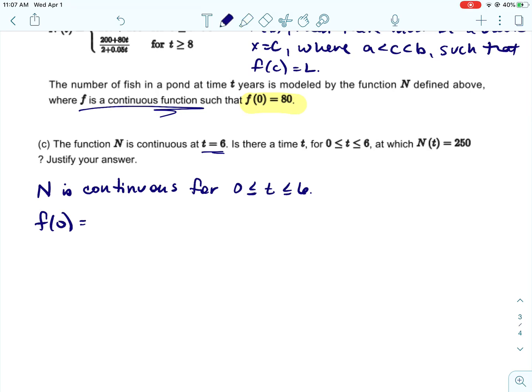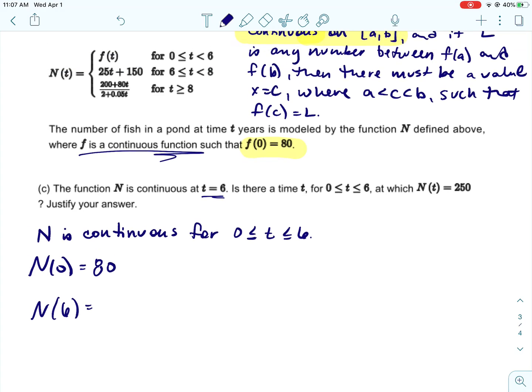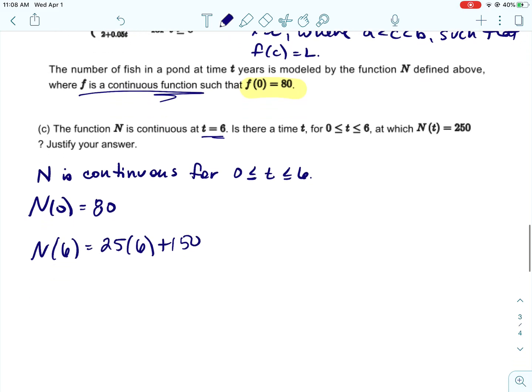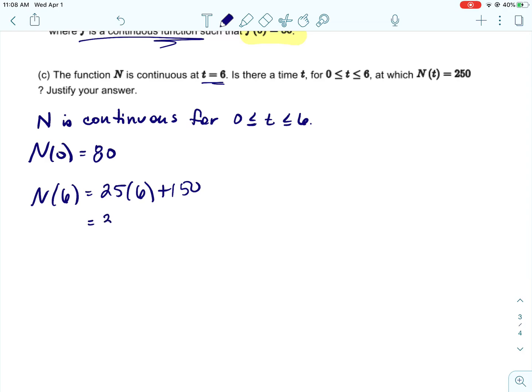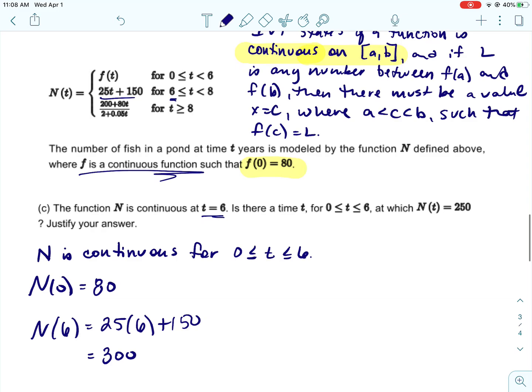The other thing we need to do is find N(0) and N(6). Now, it tells you in the problem that f(0) is 80. Oh, let's not use f, let's use N. And then N(6). So when t equals 6, then we use this function right here. So we would do 25 times 6 plus 150. Now, even if that wasn't there, if the or equal had been on the other one, we don't really know f(t), but we know the function is continuous at 6. We still could use that one for it because then we would know that they would be equal values. That's going to give you 300.